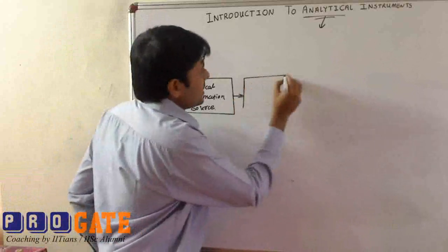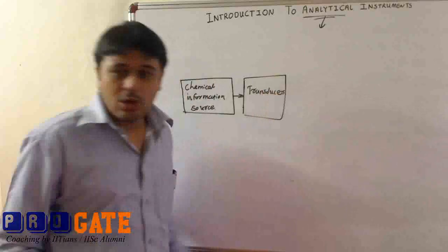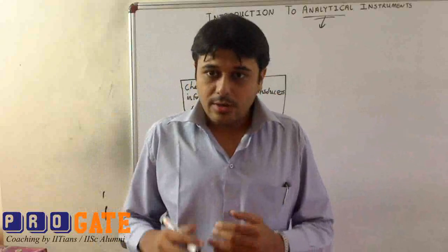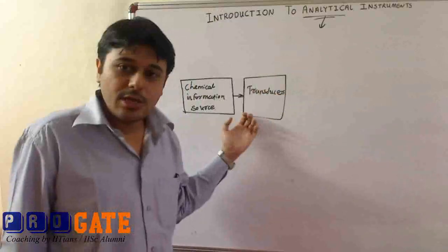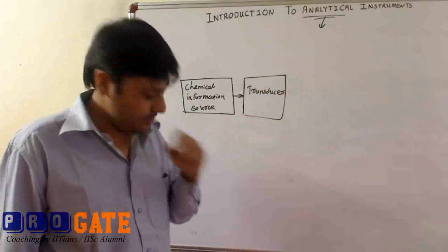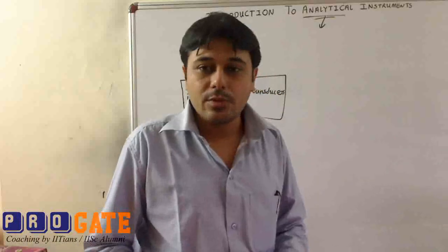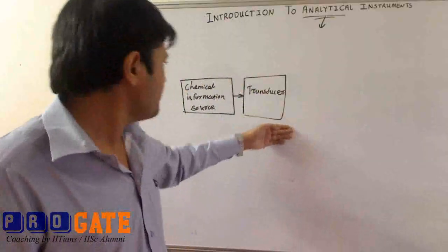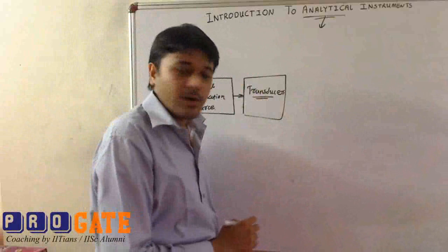This information is given to a transducer. As you all know, a transducer converts one type of energy into another type of energy. We have a large number of signal conditioning options available for electrical signals, so transducers are generally used to convert any type of signal into an electrical signal. For analytical instruments, the most widely used transducers are photodiodes and photomultiplier tubes, because the kind of information we get is in terms of light. This basically uses an electrical signal from the light source.